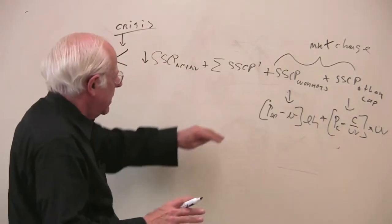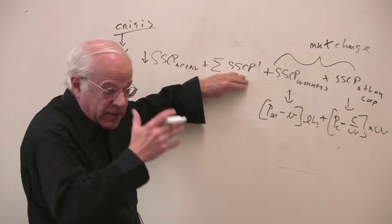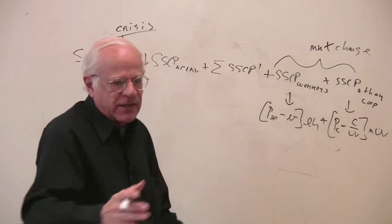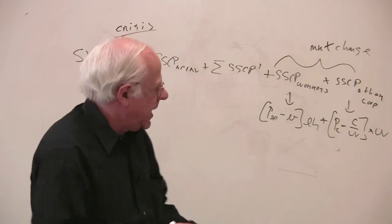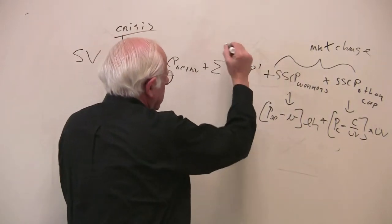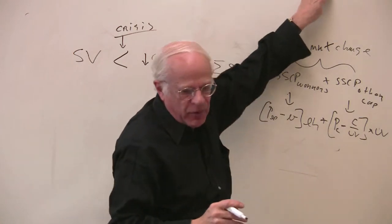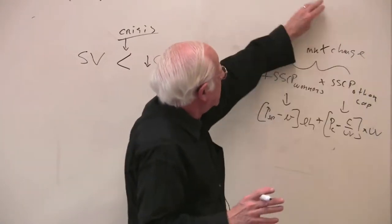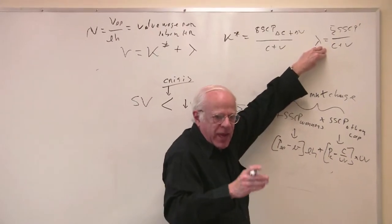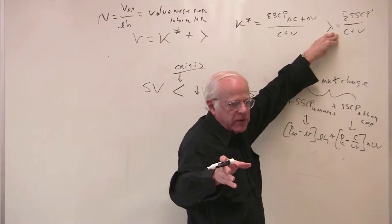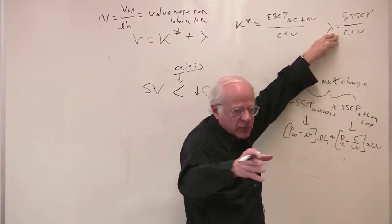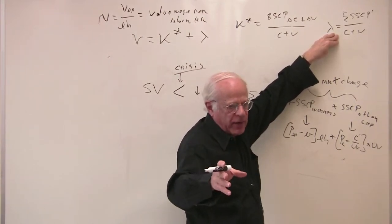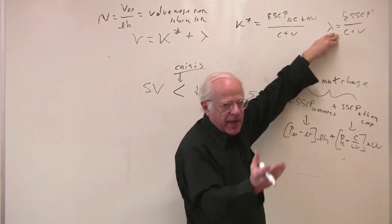Lambda is having an effect upon other markets: the credit market, management market, and land market. As this is increasing, the demand for managers is shifting to the right, just like the demand for labor power. The demand for management's labor power is shifting to the right, the demand for credit is shifting to the right, the demand for land is shifting to the right, and hence the prices of those other inputs are going to start to rise.